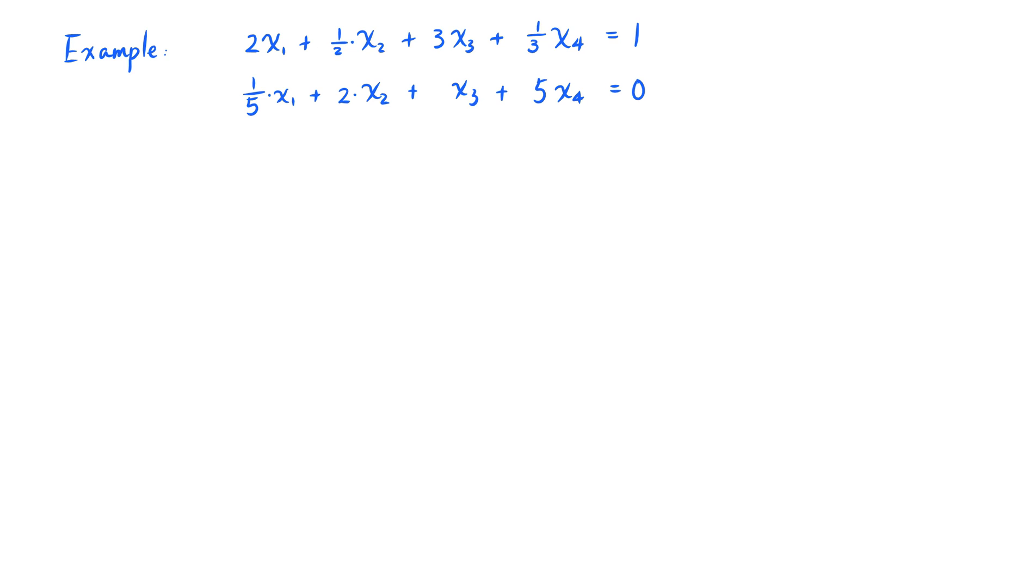Now if I have another linear equation about the same set of unknowns, then these two equations form a system of linear equations. This system we're looking at has 2 equations and 4 unknowns. So we refer to it as a 2 by 4 system of linear equations, aka a 2 by 4 linear system.